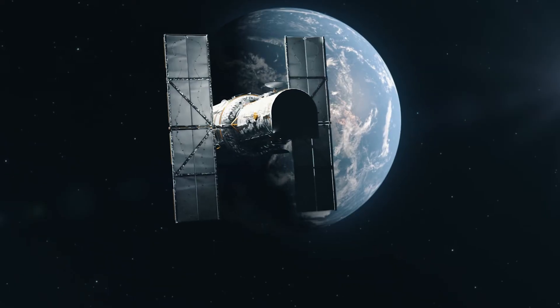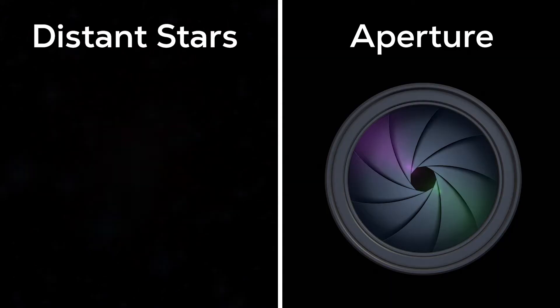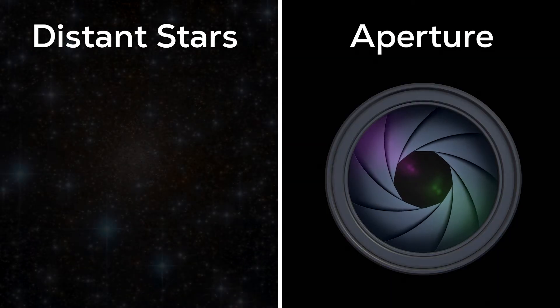If a spacecraft is taking a photo of a distant star or galaxy, it could use a wide aperture to collect as much of that dim light as possible.